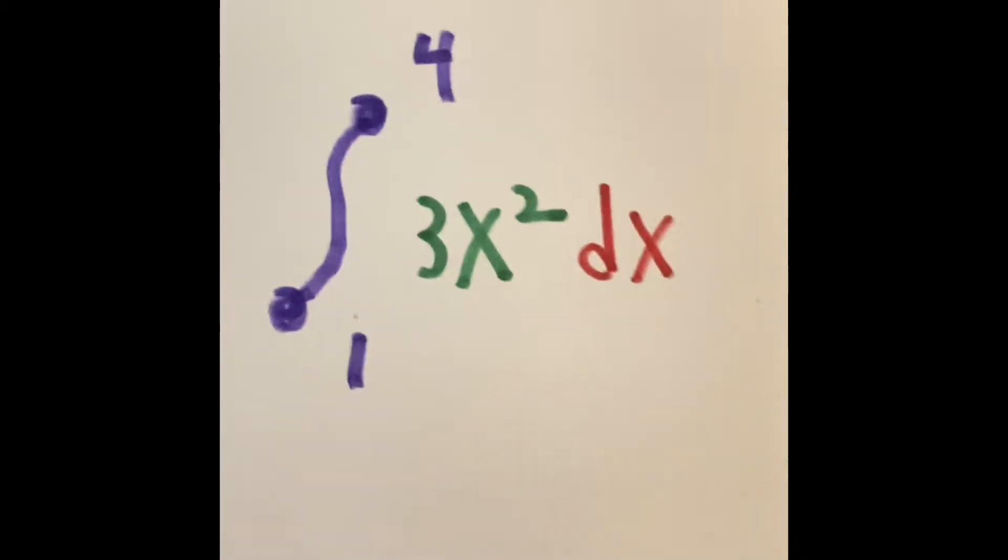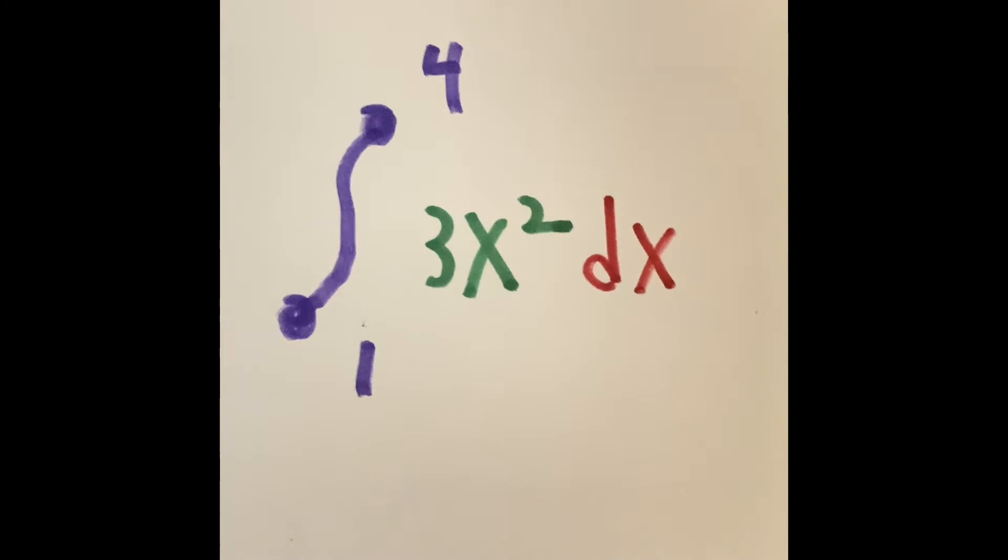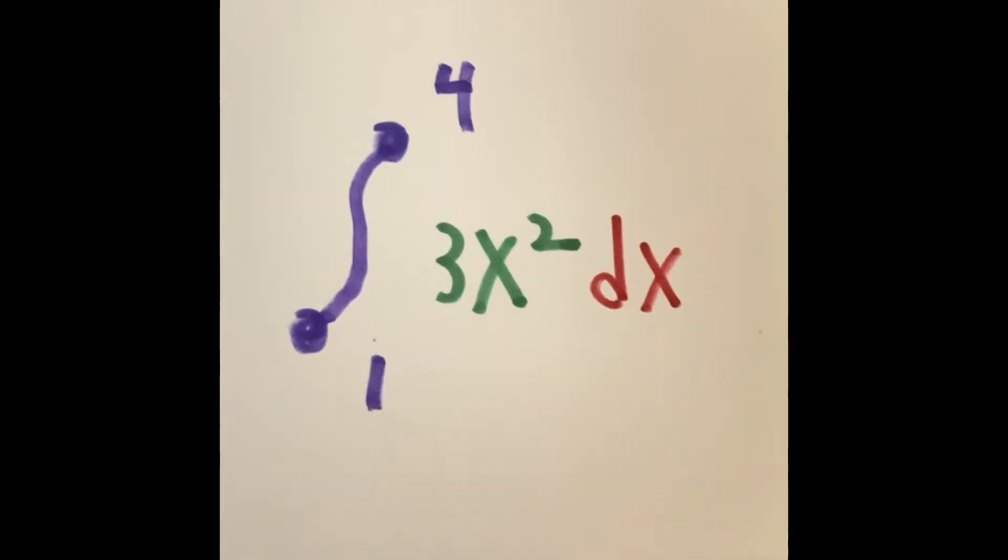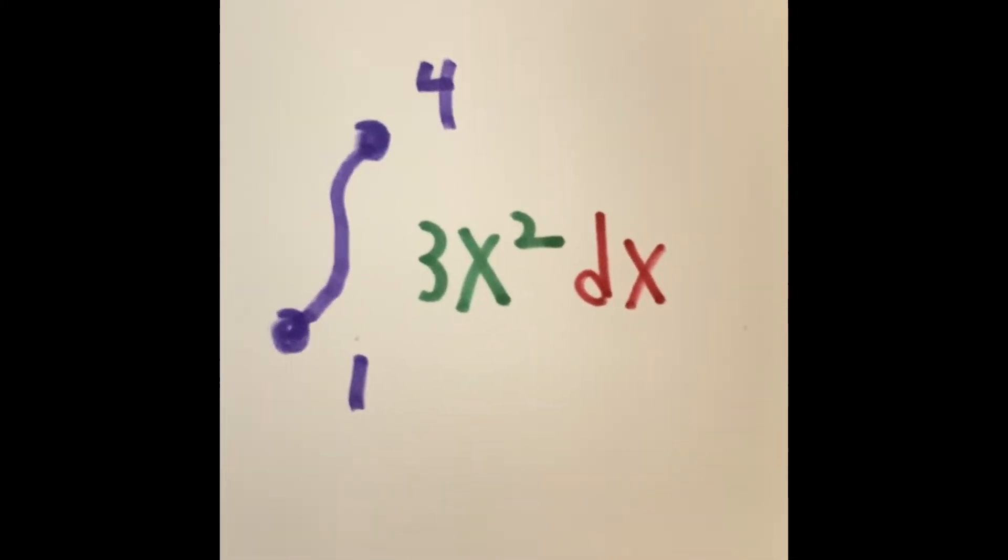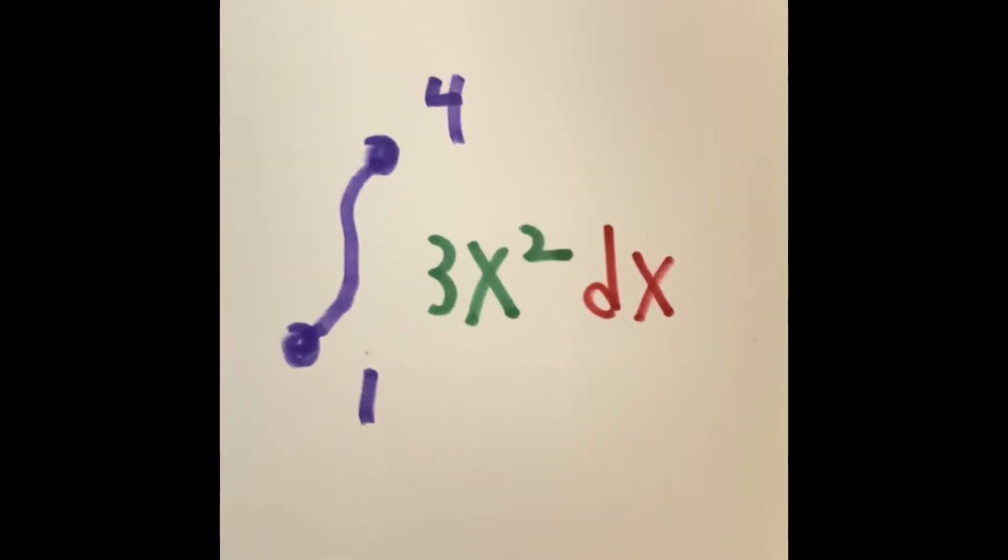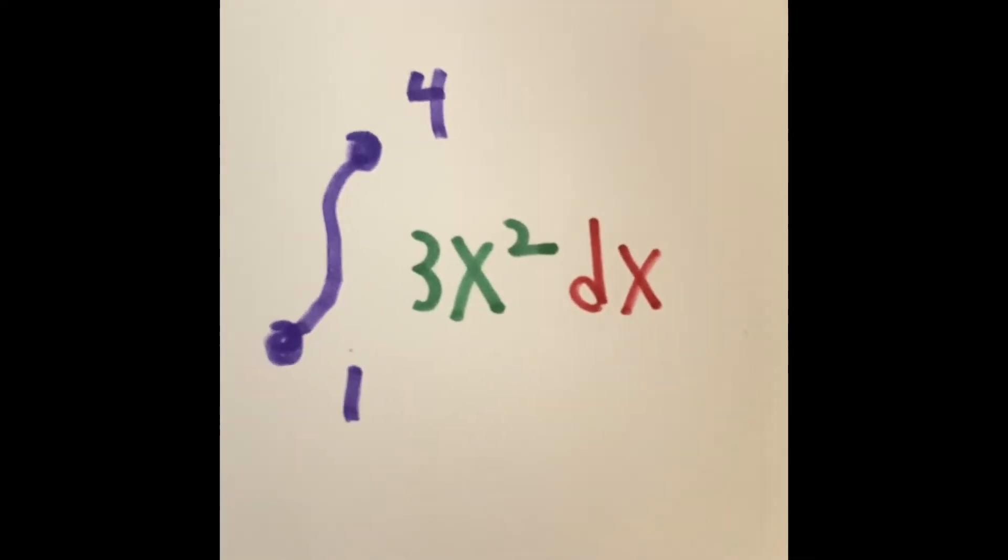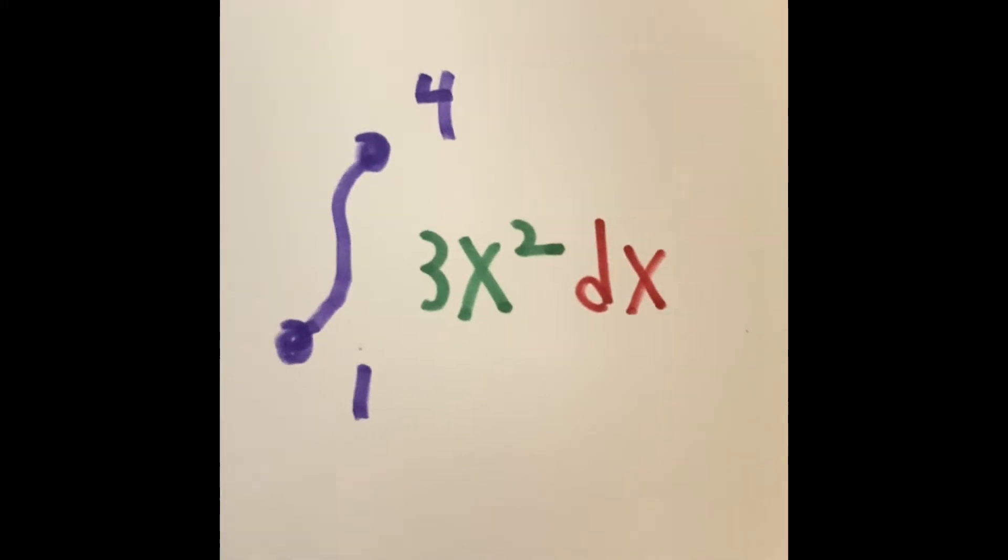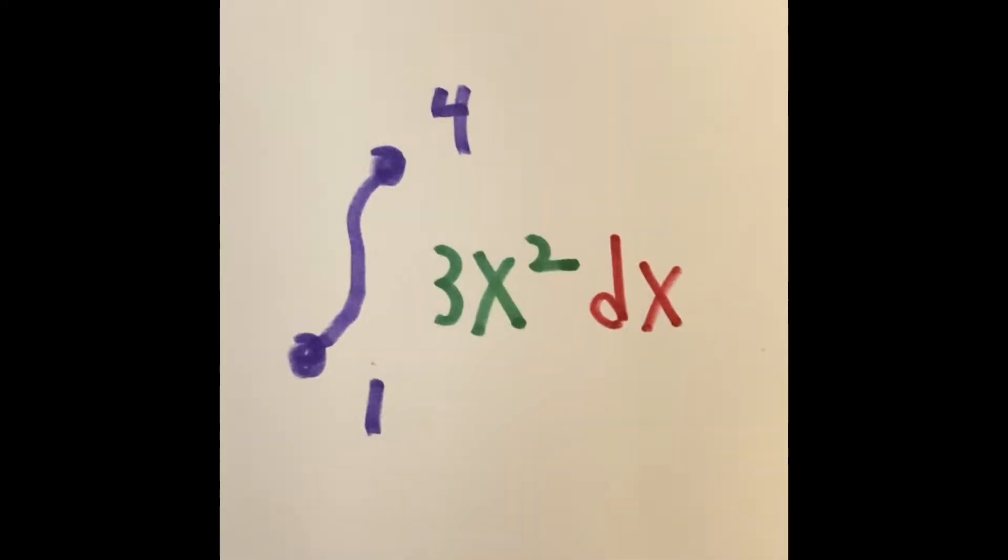So our problem is the integral of the limit between 1 and 4, 3x squared as a function, and dx as a derivative. So the figure that we're trying to find the area looks like this.